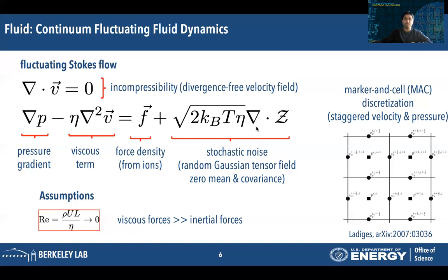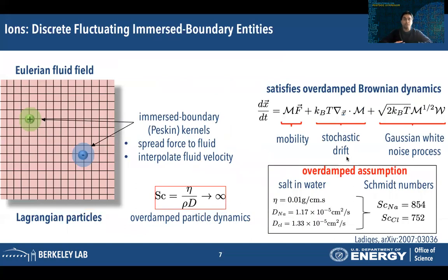We solve the fluctuating Stokes flow using a standard marker-and-cell discretization method, where the pressure field is stored at the center of finite volume cells and velocities are present at staggered cells. The second component of DISCURSE is the simulation of ions as discrete particles. In DISCURSE, these ions are represented using an immersed boundary method — to each ion is prescribed an immersed boundary or Peskin kernel, which are mathematical entities that spread the force of the ions to the fluid grid and interpolate the velocity of the fluid on the grid back to the ions. We have an Eulerian fluid field in which these ions act as Lagrangian particles.